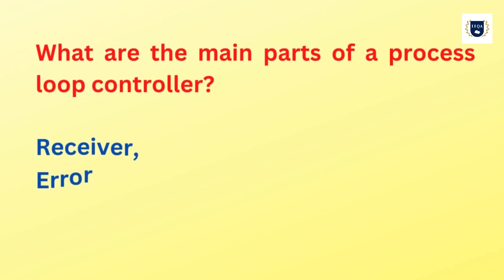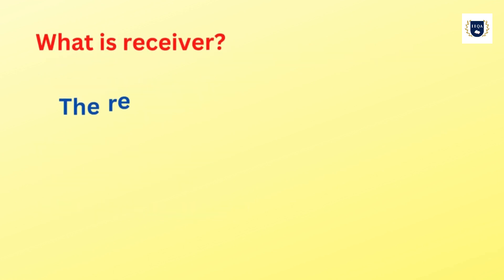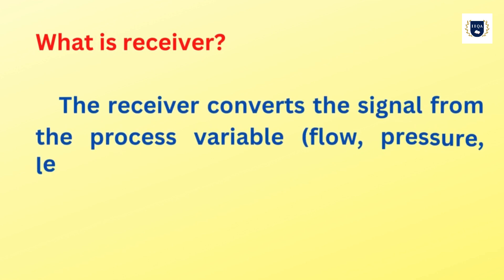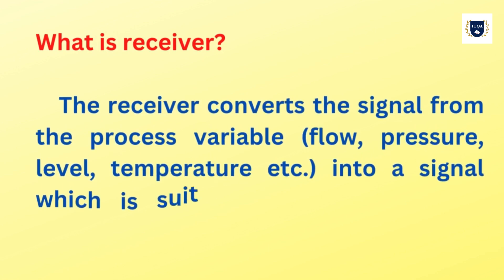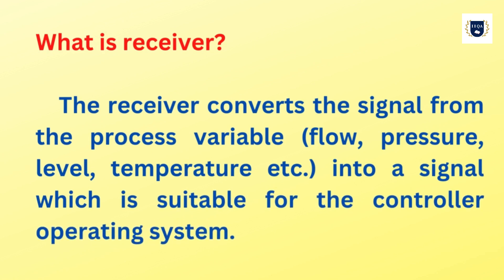What are the main parts of a process loop controller? Receiver, error detector, and control amplifier. The receiver converts the signal from the process variable — flow, pressure, level, temperature, etc. — into a signal which is suitable for the controller operating system.